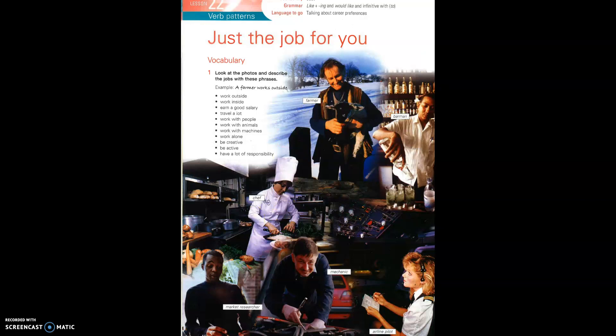Then dive into this activity here. The teacher's book notes are good for this, so please feel free to follow those. The difference I would make is maybe don't give them the words for the jobs at first — show them the pictures and try to elicit the jobs. It's a good rule of thumb to always try to elicit rather than give things, as it keeps the students engaged and keeps them with you. Once you've got the names of the jobs, which they will largely know, move on to activity one. You might need to check vocabulary like 'creative,' 'active,' and 'responsibility.'